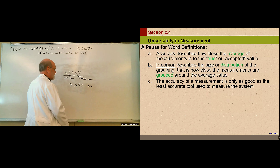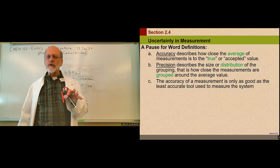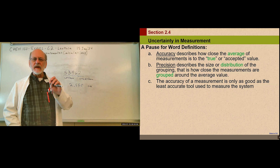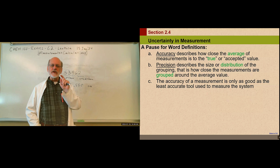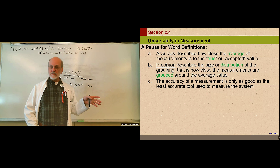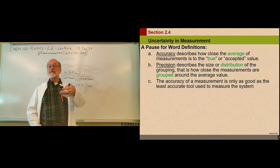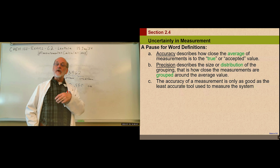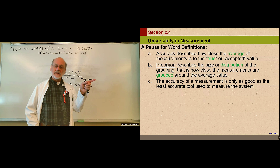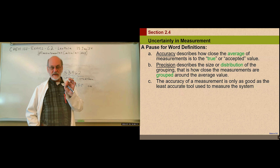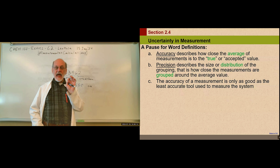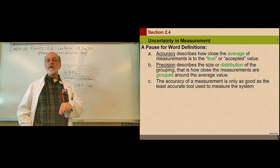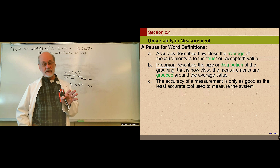There's another way to deal with uncertainty — in terms of how close your measurement is to an accepted value. If there is an accepted value or true value, how close is your measurement to it? That's a measure of accuracy. An accurate value is close to the accepted or true value if we happen to know it.